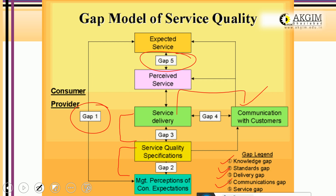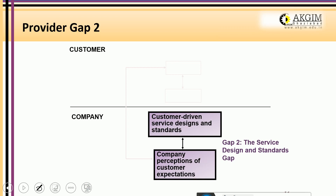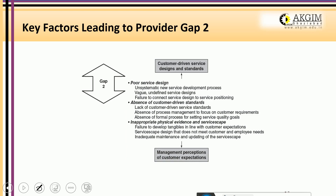Gap 5 is the Service Gap. When the actual service is delivered, if there is a difference between what the customer expected and how the customer perceived the actual service, that leads to Gap 5. We are understanding these gaps because we are in the process of designing the service, and the Gap Model helps us understand service quality and identify where gaps arise.